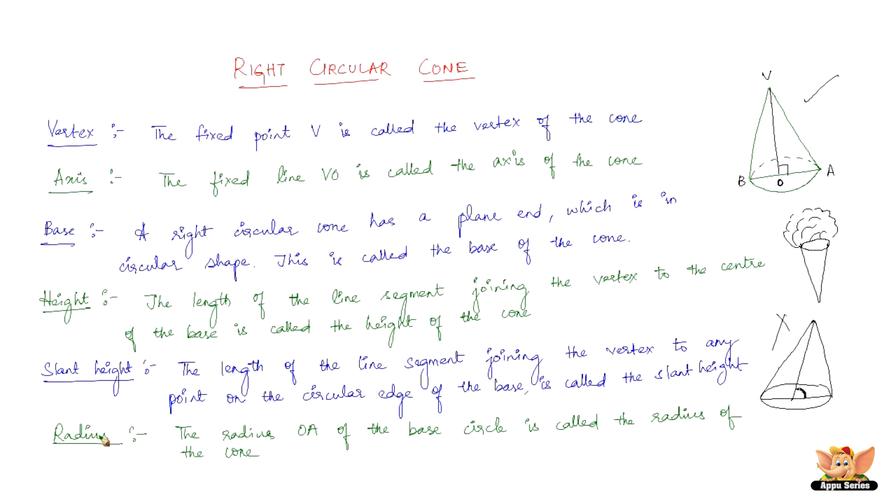The final point is the radius. The radius OA of the base circle is called the radius of the cone.